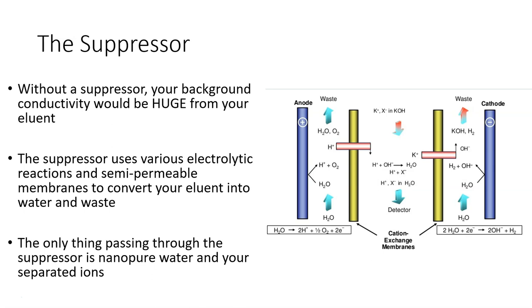The suppressor uses various electrolytic reactions and semi-permeable membranes to convert your eluent into water and waste. The example on the right here shows a sample leaving an anion exchange analytical column in a potassium hydroxide eluent. The electrolytic reactions taking place on the sides convert your base into water and your cations into waste. It's not super important to understand all of these reactions, but it's important to understand that the suppressor is essential to getting good conductivity measurements.